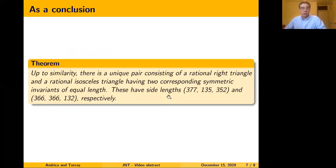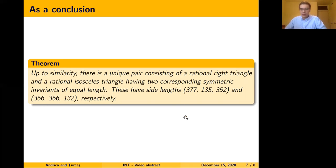The conclusion is that up to similarity there is a unique pair consisting of a rational right triangle and a rational isosceles triangle having two corresponding symmetric invariants of equal length, and these are the two triangles that were found by the authors of the result presented on the first slide. Thank you very much for your attention.